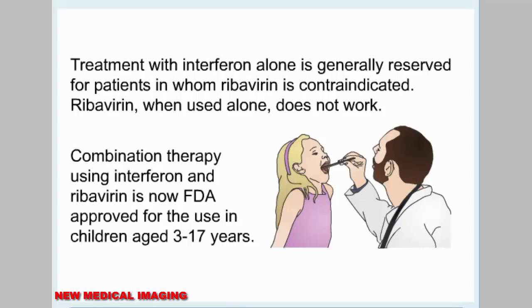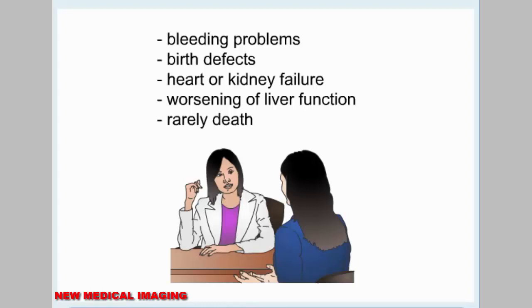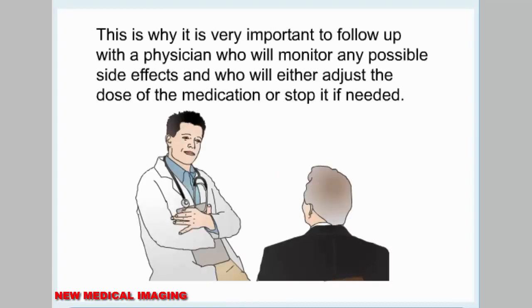Combination therapy using interferon and ribavirin is now FDA-approved for use in children aged 3 to 17 years. The combination of interferons and ribavirin has many possible side effects including headaches, fever, loss of appetite, fatigue, nausea and vomiting, increased susceptibility to infections, bleeding problems, birth defects, heart or kidney failure, worsening of liver function, and rarely death. It is very important to follow up with a physician who will monitor any possible side effects and who will either adjust the dose of the medication or stop it if needed.